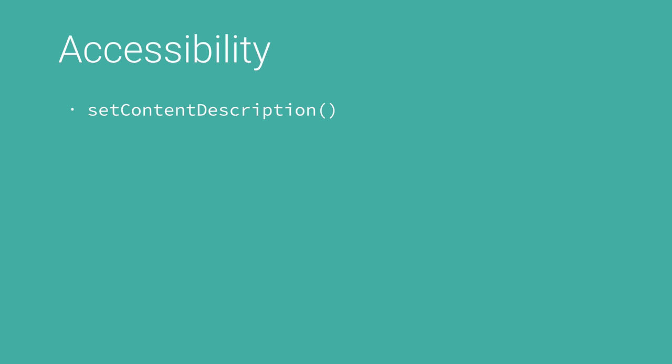That keypad, if you're just drawing to the canvas with no accessibility improvements, somebody who is visually impaired can't use the app at all. They'll explore the screen with their finger, get to the keypad, and it'll just say 'keypad,' even though there are 12 buttons to press. For a simple view drawing text, you can get away with just setting the content description — Android will read this back using TalkBack. For a more complex view like the keypad, use ExploreByTouchHelper from the Support v4 library. They gave a fantastic talk about this at Google I/O 2013.